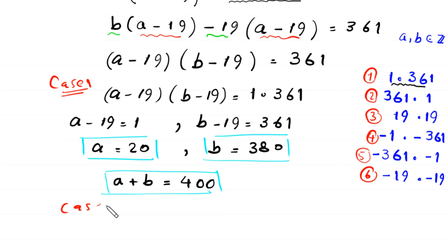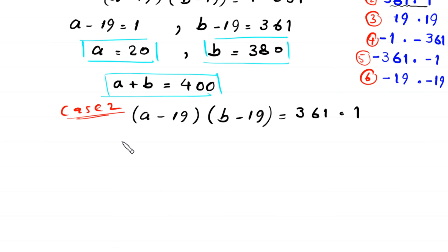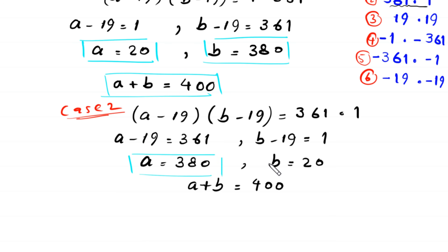Now we solve case 2. We write (a minus 19) times (b minus 19) equal to 361 times 1. So a minus 19 equals 361 and b minus 19 equals 1. From the first equation we get a equals 380, and from the second we get b equals 20. So a plus b equals 400.